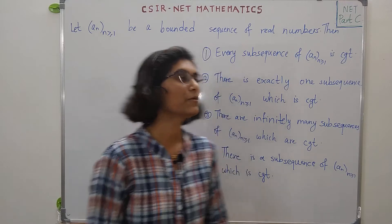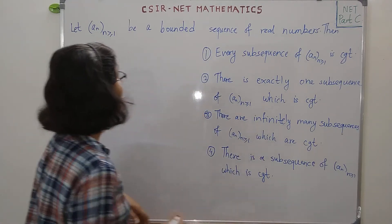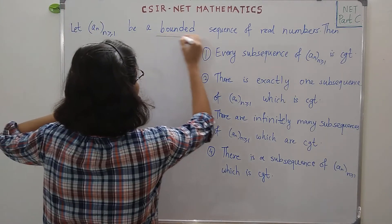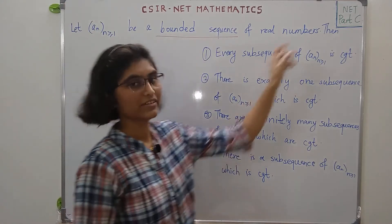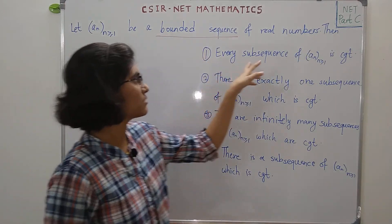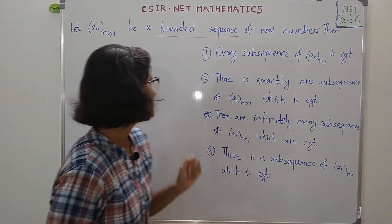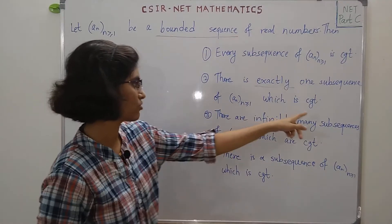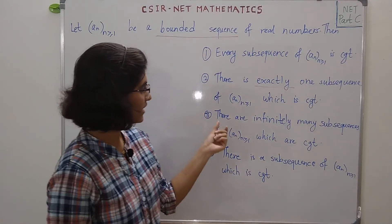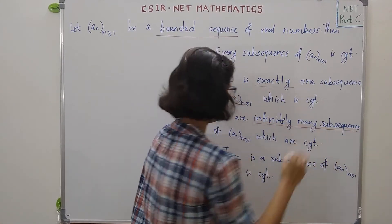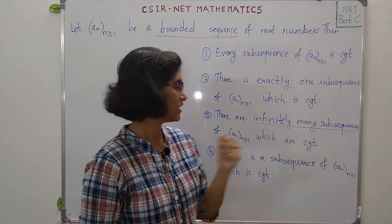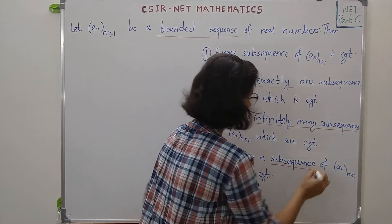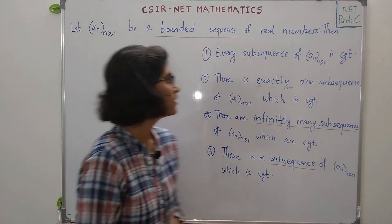Let us solve another question, also from Part C, which is about sequences. We have given {Aₙ} as a bounded sequence of real numbers, and we need to check which options are true.